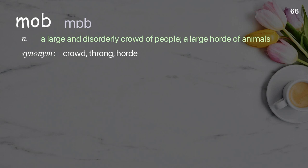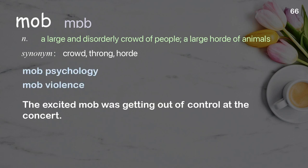Mob: a large and disorderly crowd of people; a large horde of animals. Examples: mob psychology, mob violence. The excited mob was getting out of control at the concert.